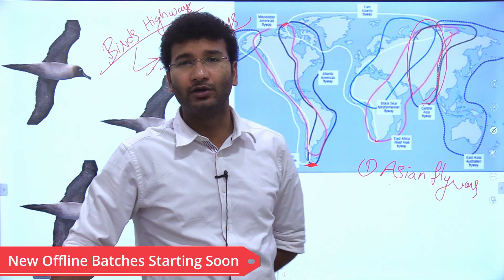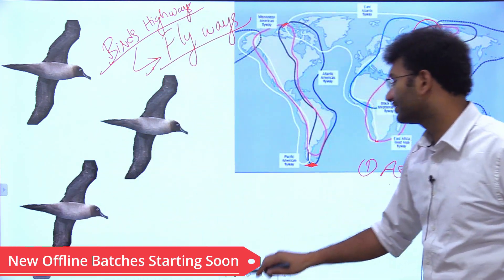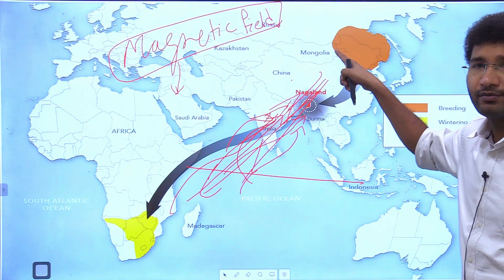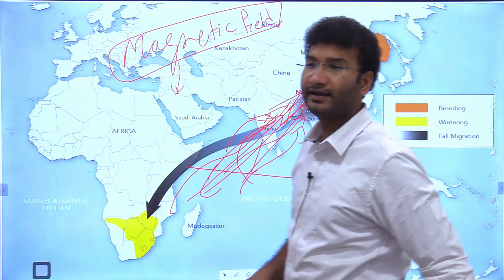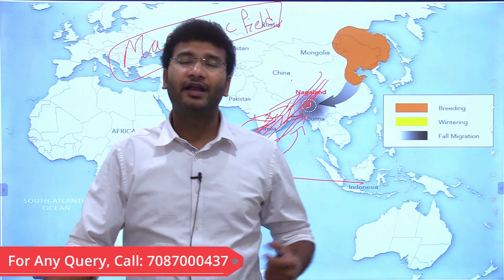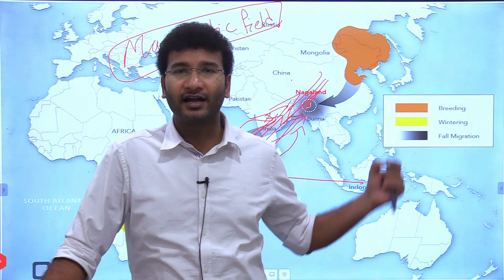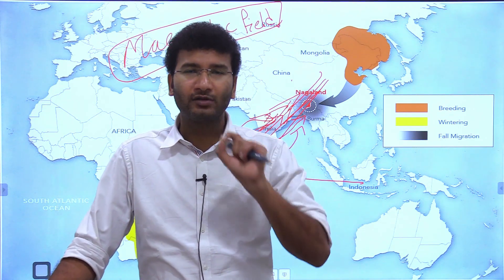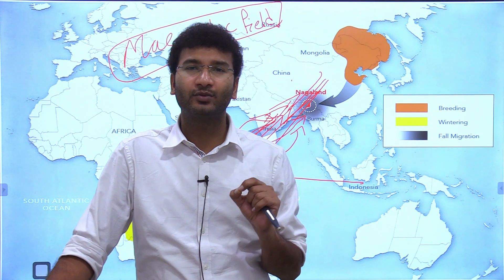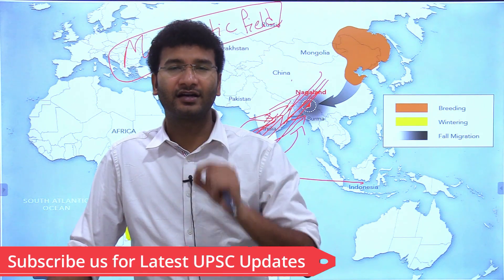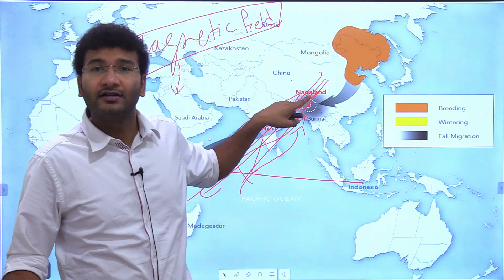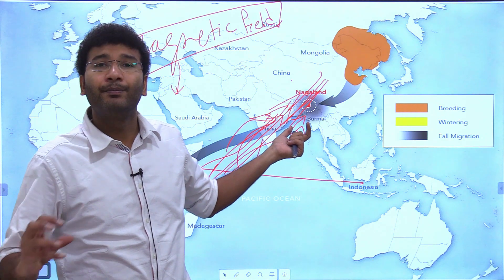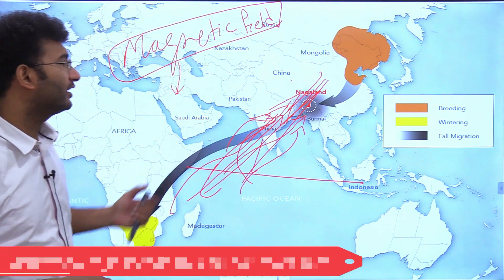The Amur Falcon is an important example of the Asian flyway. Starting from Mongolia and landing in Nagaland, it eats the flies in that region. Those flies and small birds would otherwise eat the harvest, so the Amur Falcon protects the crops and improves yield for local people — making it ecologically beneficial.